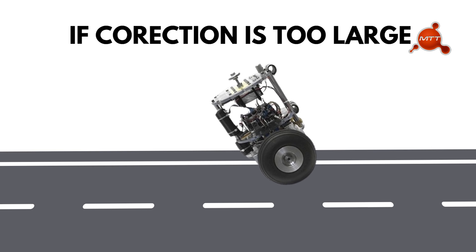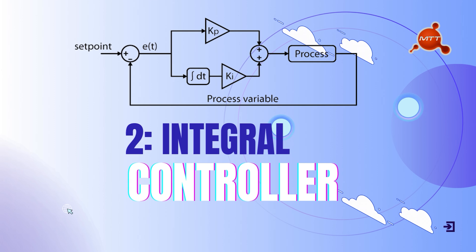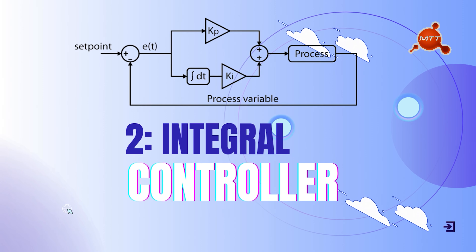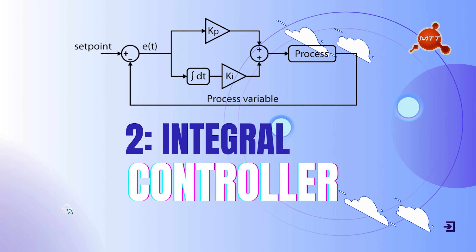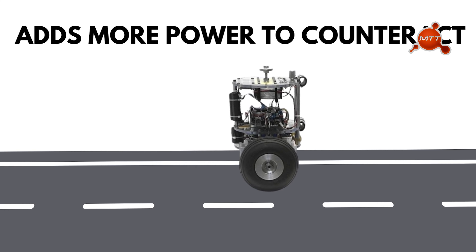Moving forward to the I and D controllers: the integral component focuses on the accumulated error over time. If the system has consistent small errors even after proportional corrections, the integral term adds up these errors and adjusts the input to eliminate them. In the self-balancing robot example, if the robot is still leaning slightly after several seconds, the I controller adds more power to the wheels to counteract this accumulated error and bring it perfectly upright.